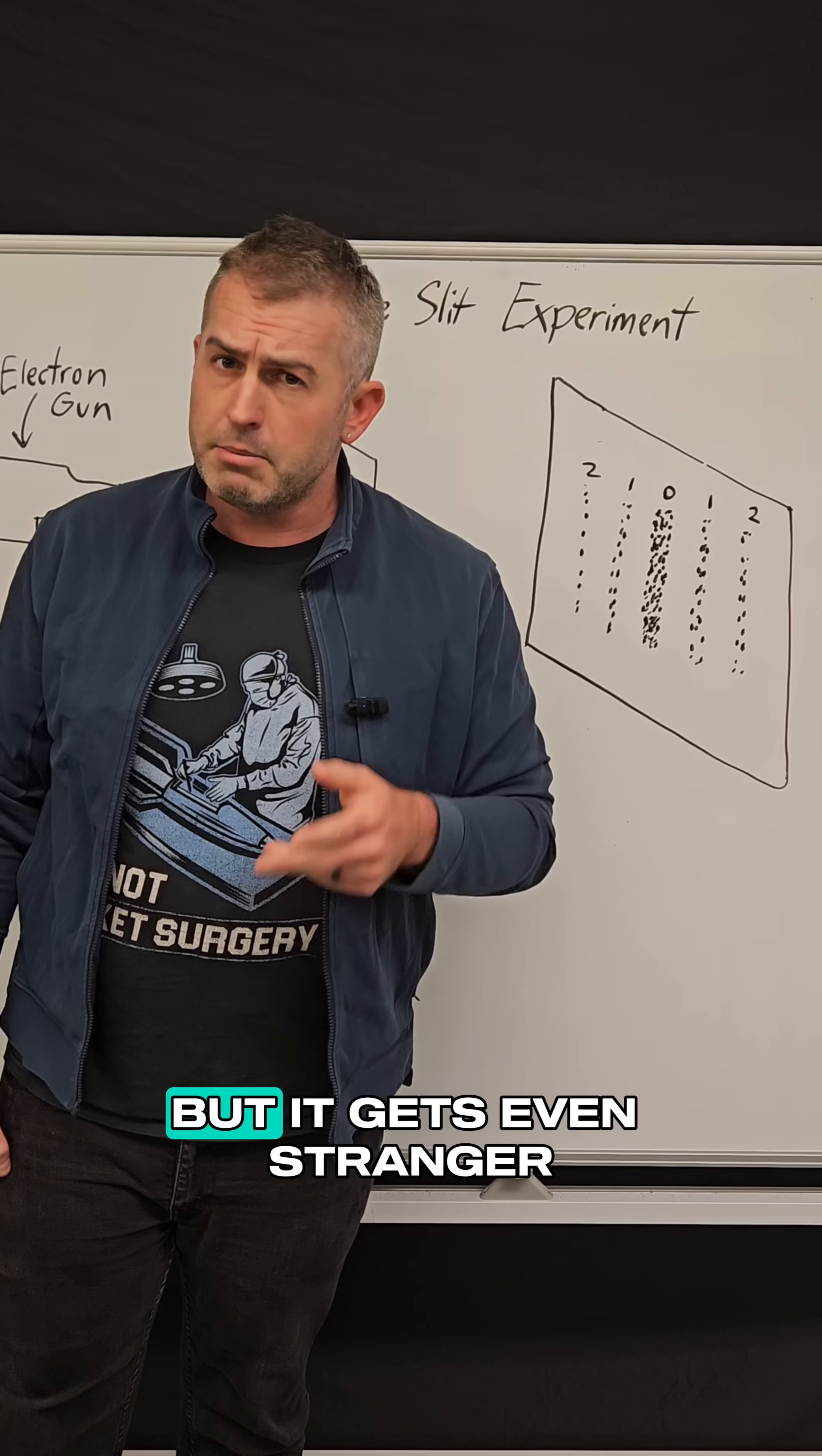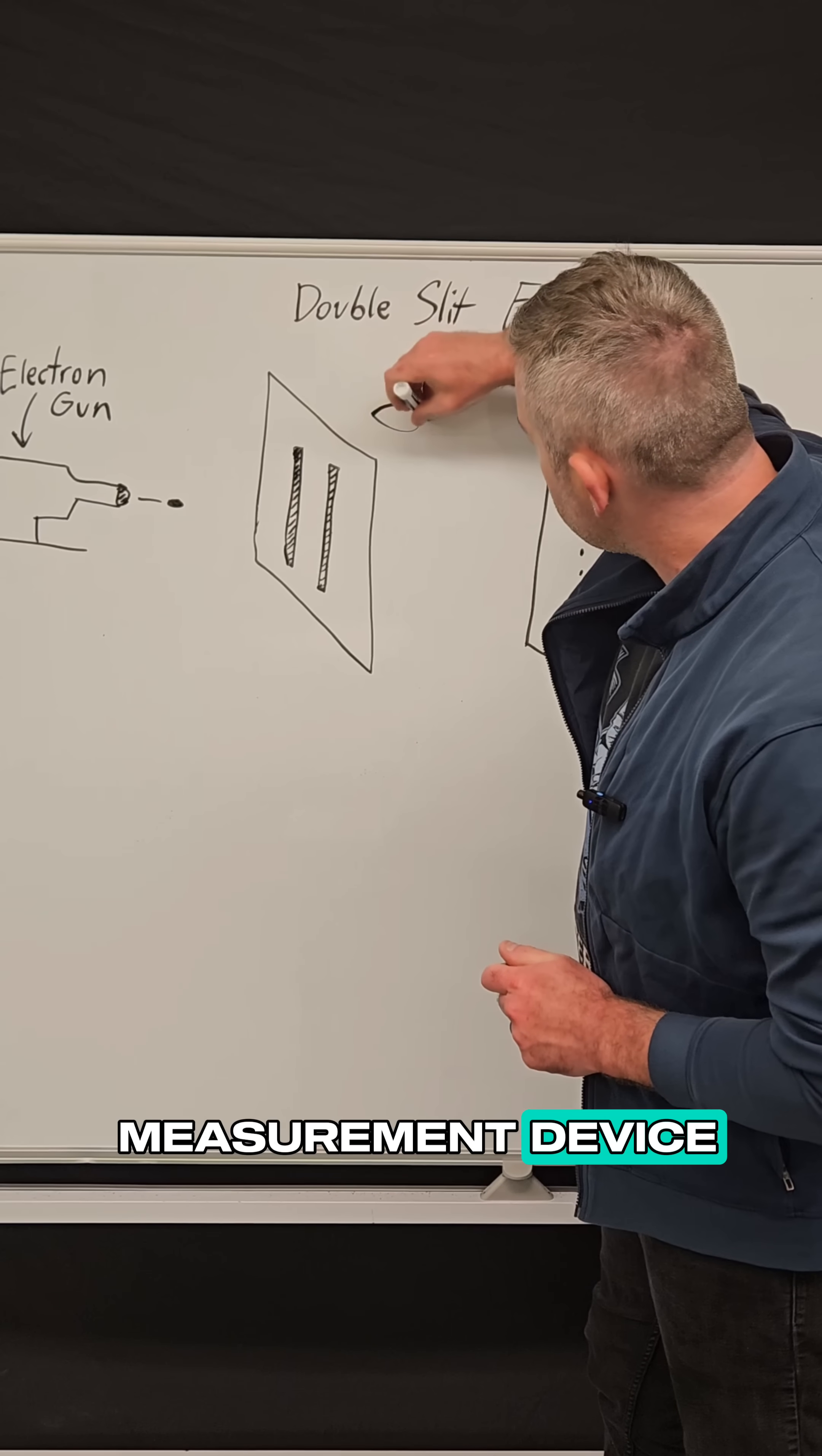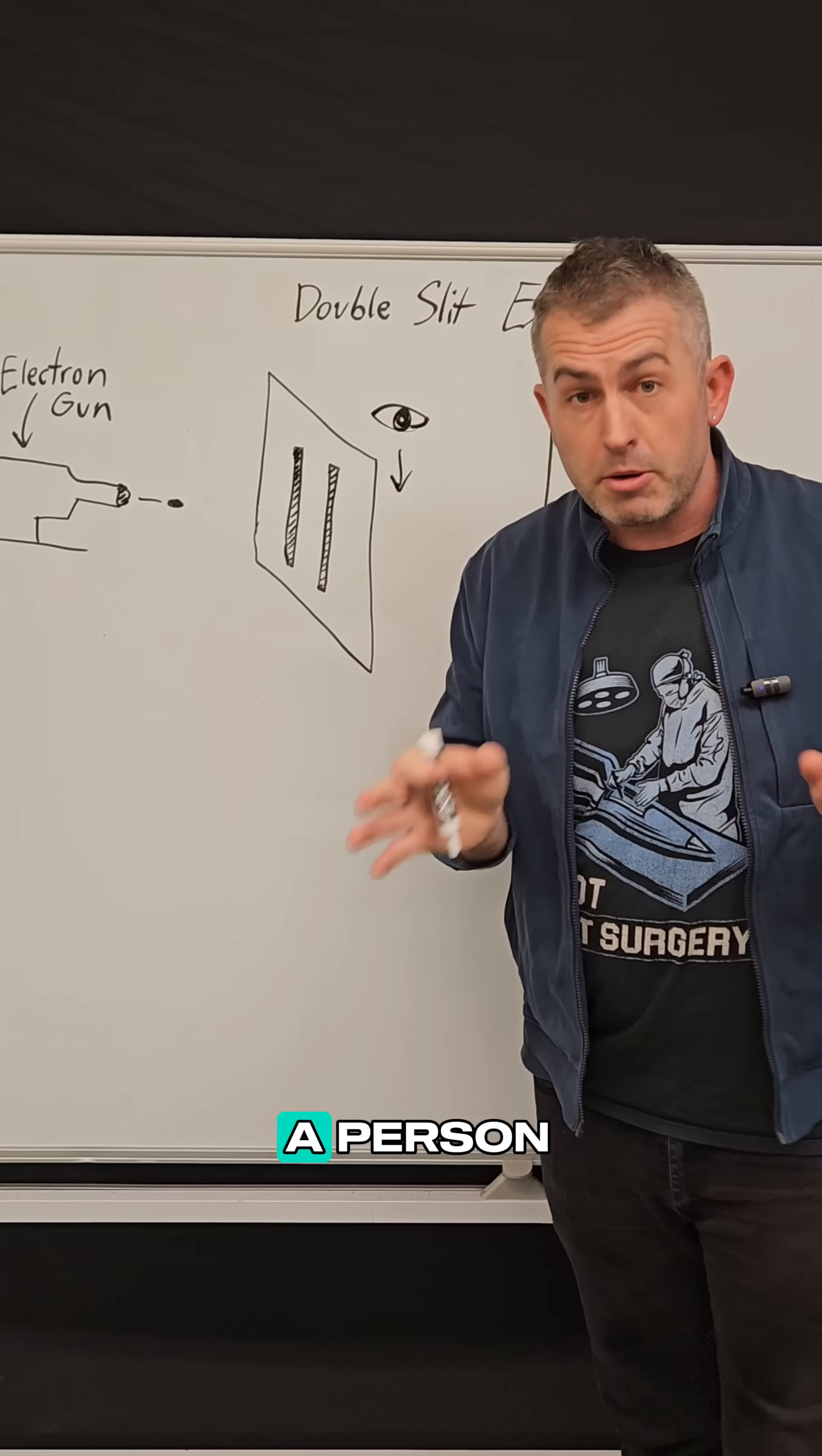That's pretty weird and kind of creepy, but it gets even stranger. So we decided to put some kind of measurement device. I'm going to draw an eyeball to show that we're observing, although it is not a person, it's a machine.